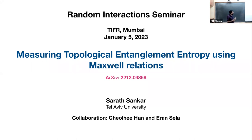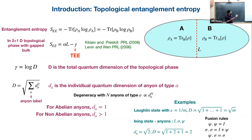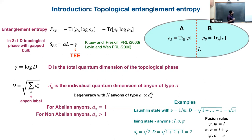Many of you might be familiar with topological entanglement entropy, but let me give a brief introduction. So topological entanglement entropy, I'll be calling TEE, is a very kind of signature of topological order in the system. It was introduced in 2006 simultaneously by two groups. To understand this, let's look at what entanglement entropy is. You take some system and divide it into two parts, A and B, and look at the reduced density matrix of one part, say A.